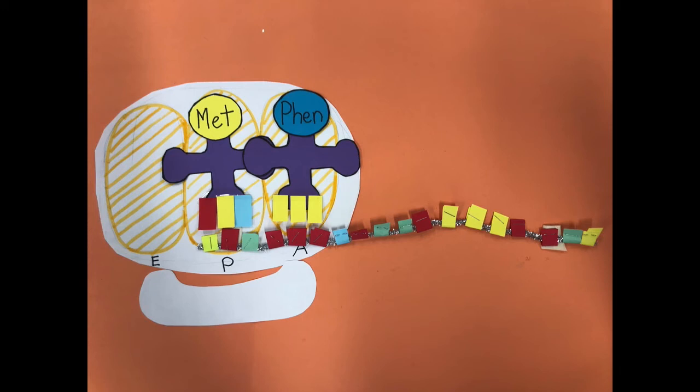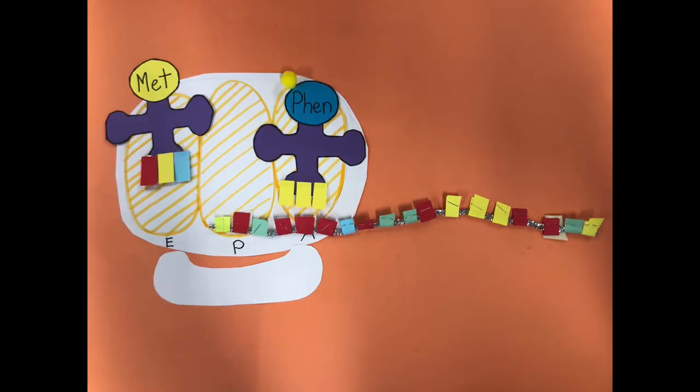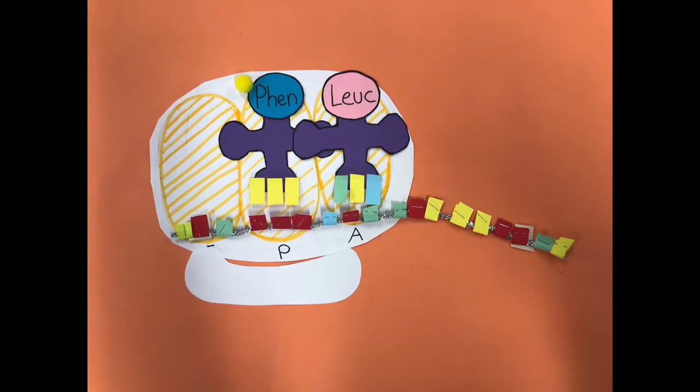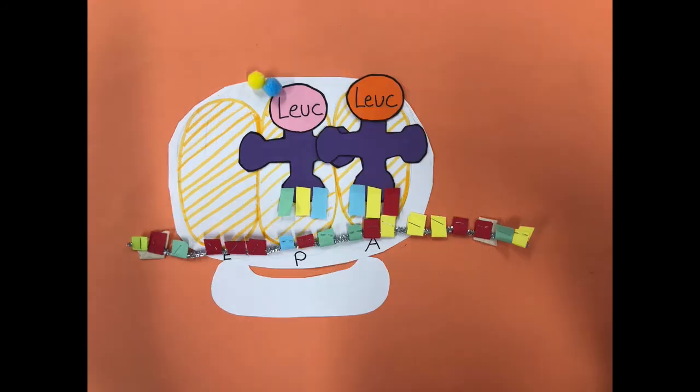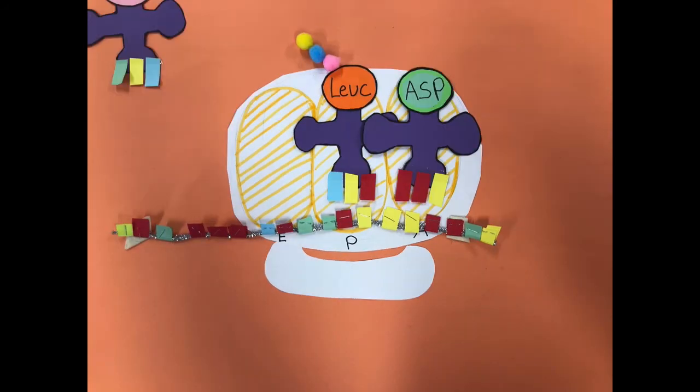From the P-site, the amino acid moves to the E-site, eventually exiting the ribosome. The second amino acid then moves into the P-site, and a new amino acid appears into the A-site. As this process continues, the polypeptide chain elongates.